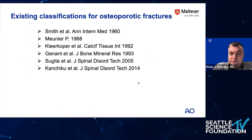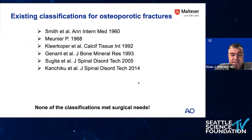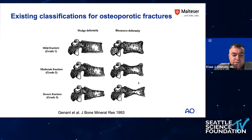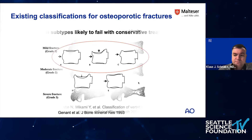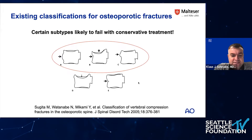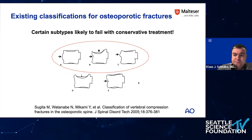Existing classifications for osteoporotic fractures were already invented 60 years ago. However, none of the classifications really met surgical needs or were successful in the surgical area. In Central Europe, the Genon classification was used a lot — our internal medicine doctors still use it — but from a surgical point of view, regarding whether to operate or not and how to stabilize, it's not really helpful. In 2005, Sugita proposed a classification based on MRI only, with roughly 80 cases, but even that classification was not widely adopted.